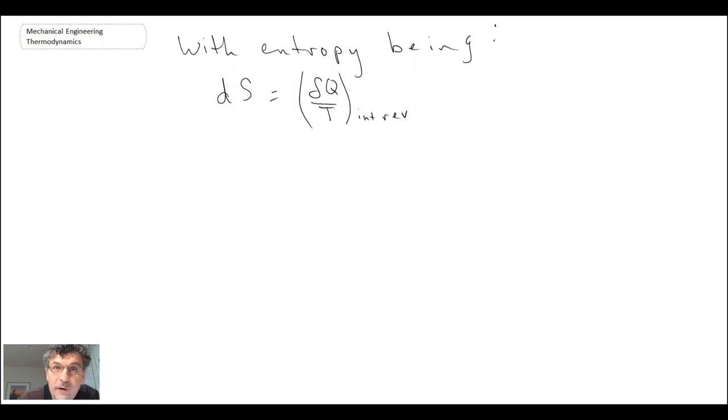Typically when you look in books in thermodynamics, you'll find tables in the back of the book with entropy tabulated. You can also compute it for ideal gases, and it's also listed in the back of the book for ideal gases as well.